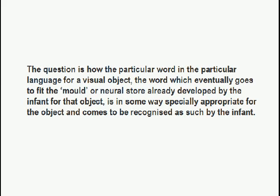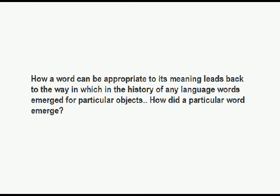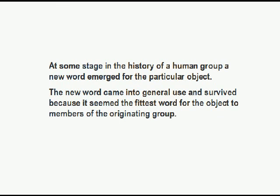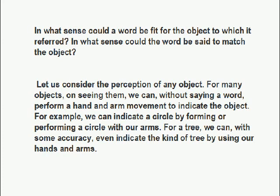The question is how a particular word in a particular language for a visual object — a word which eventually fits the mold or neural store already developed by the infant for that object — is in some way specially appropriate for the object. How a word can be appropriate to its meaning leads to how, in the history of any language, words emerged for particular objects. How did a particular word emerge? At some stage in the history of a human group, a new word emerged for a particular object, came into general use, and survived because it seemed the fittest word for the object. In what sense could a word be fit for, or match, the object to which it referred?